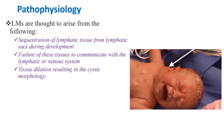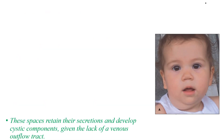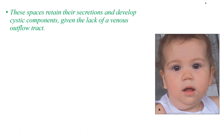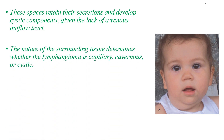Cystic hygromas are thought to arise from sequestration of lymphatic tissue from lymphatic sacs during development, or failure of this tissue to communicate with the lymphatic or venous system, and tissue dilation resulting in cystic morphology. These lymphatic residues can penetrate adjacent structures or dissect along fascial planes, eventually become canalized, retain their secretion, and develop cystic components given the lack of venous outflow tract. The nature of the surrounding tissue determines whether the lymphangioma is capillary, cavernous, or cystic.